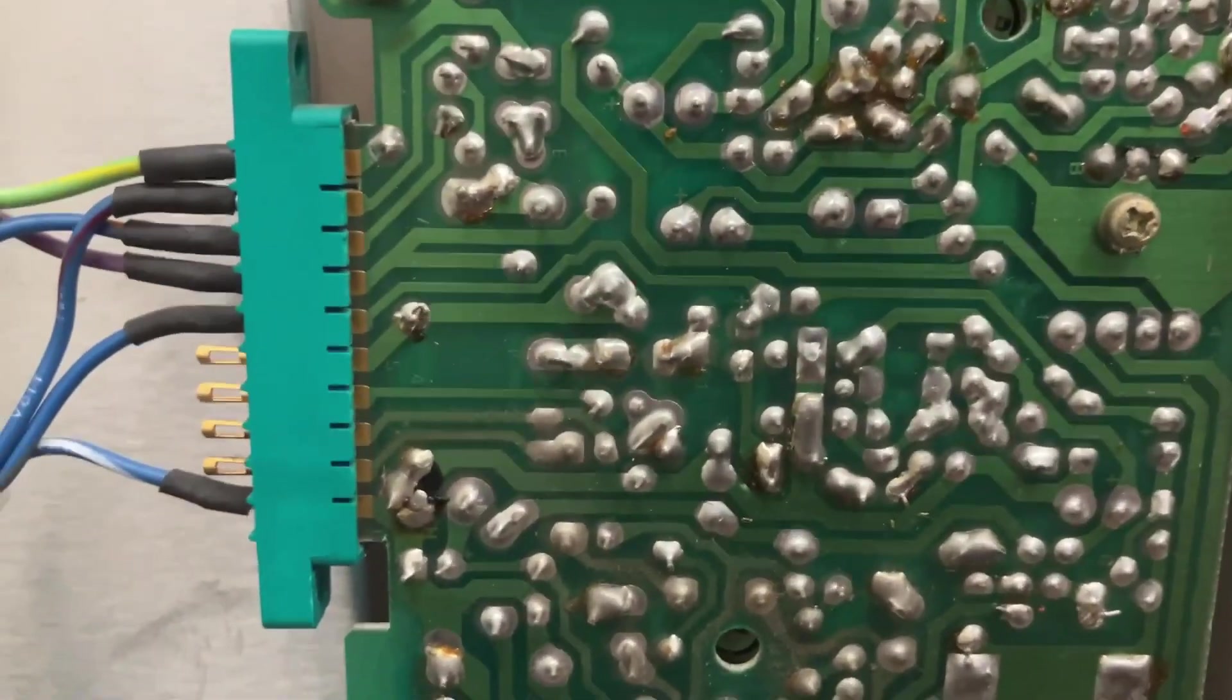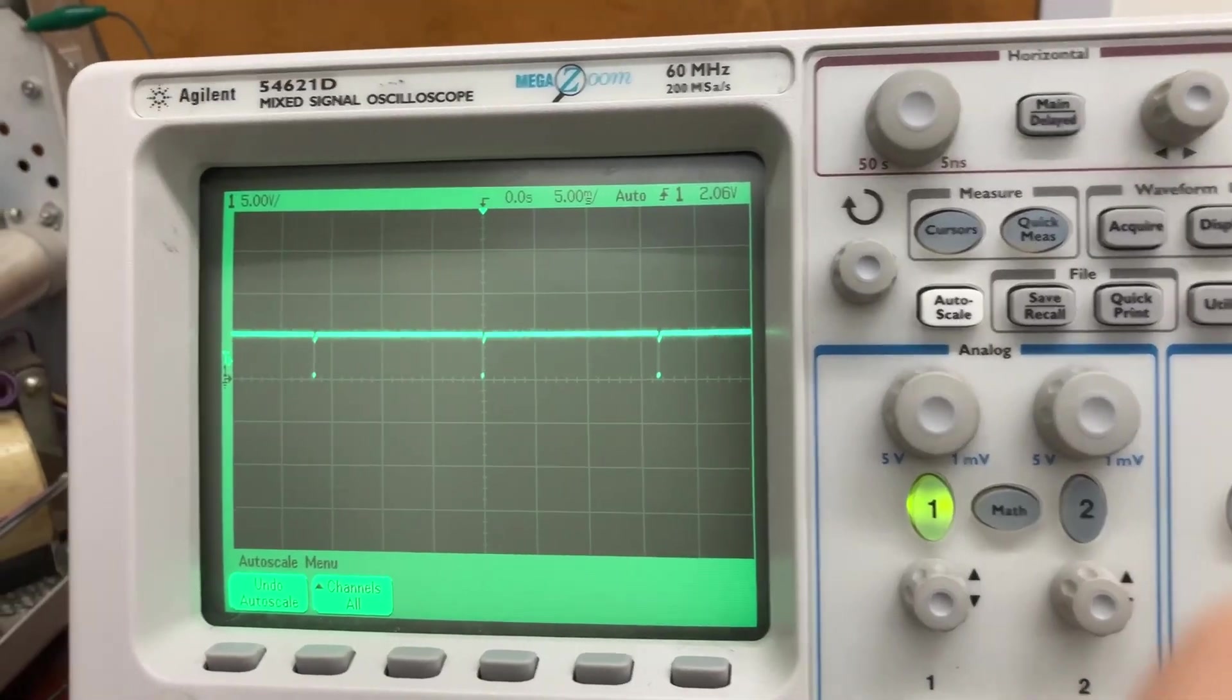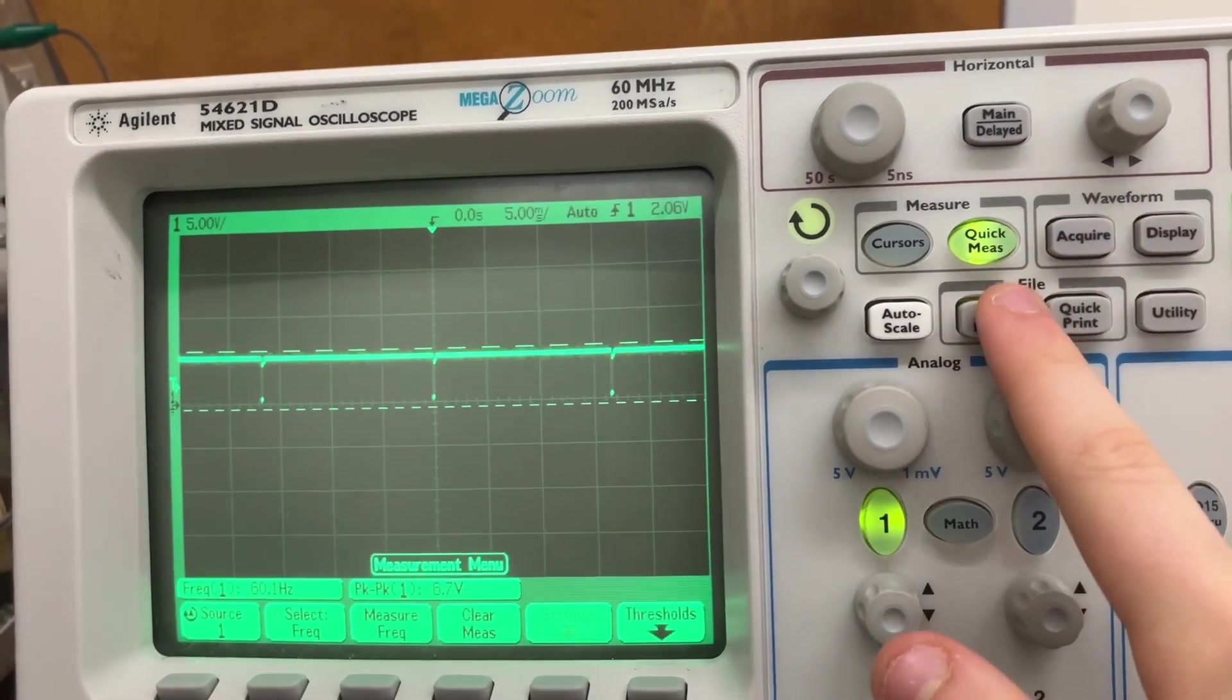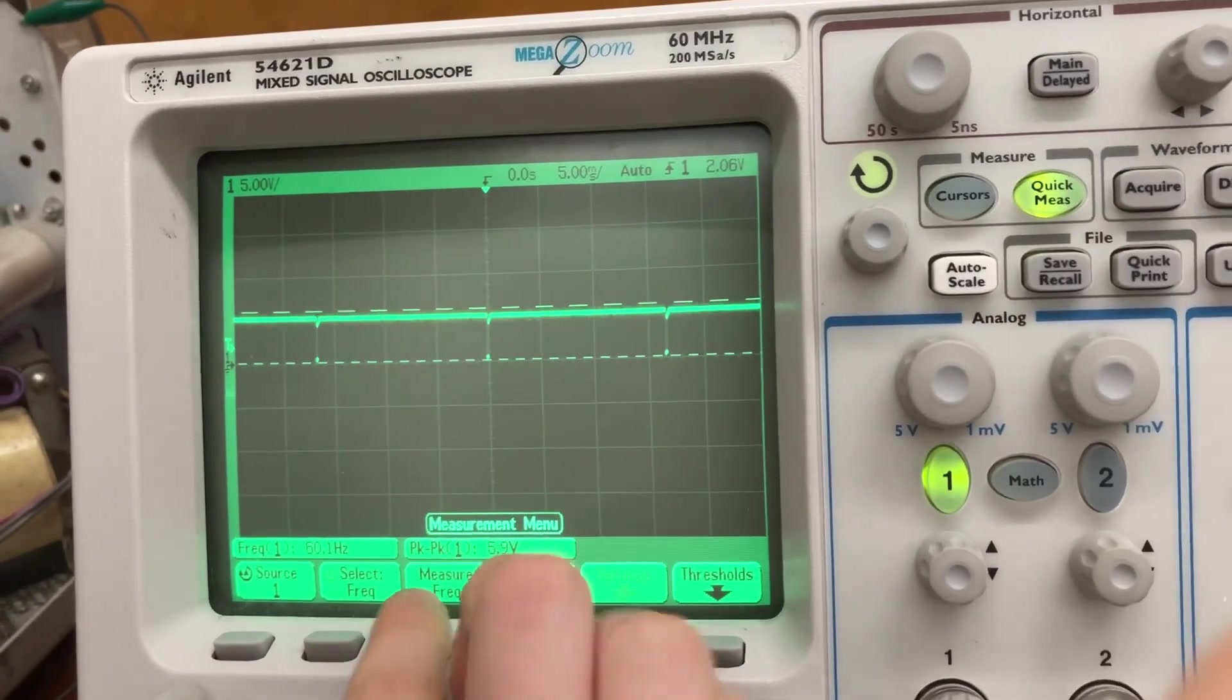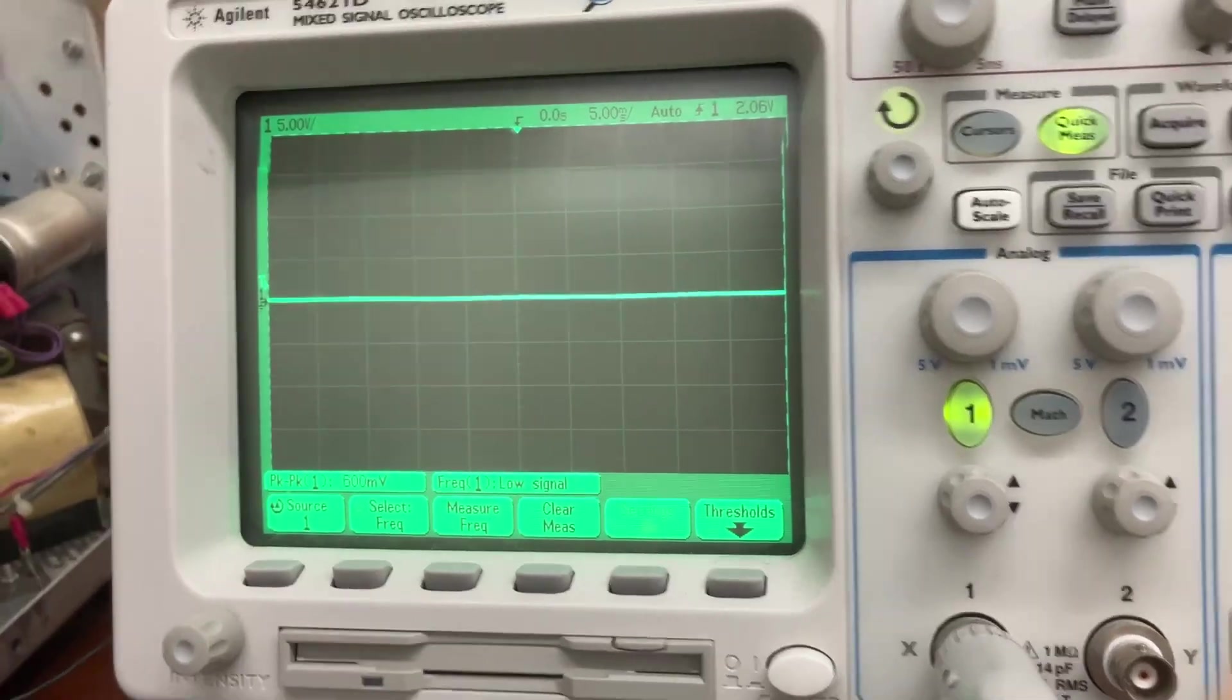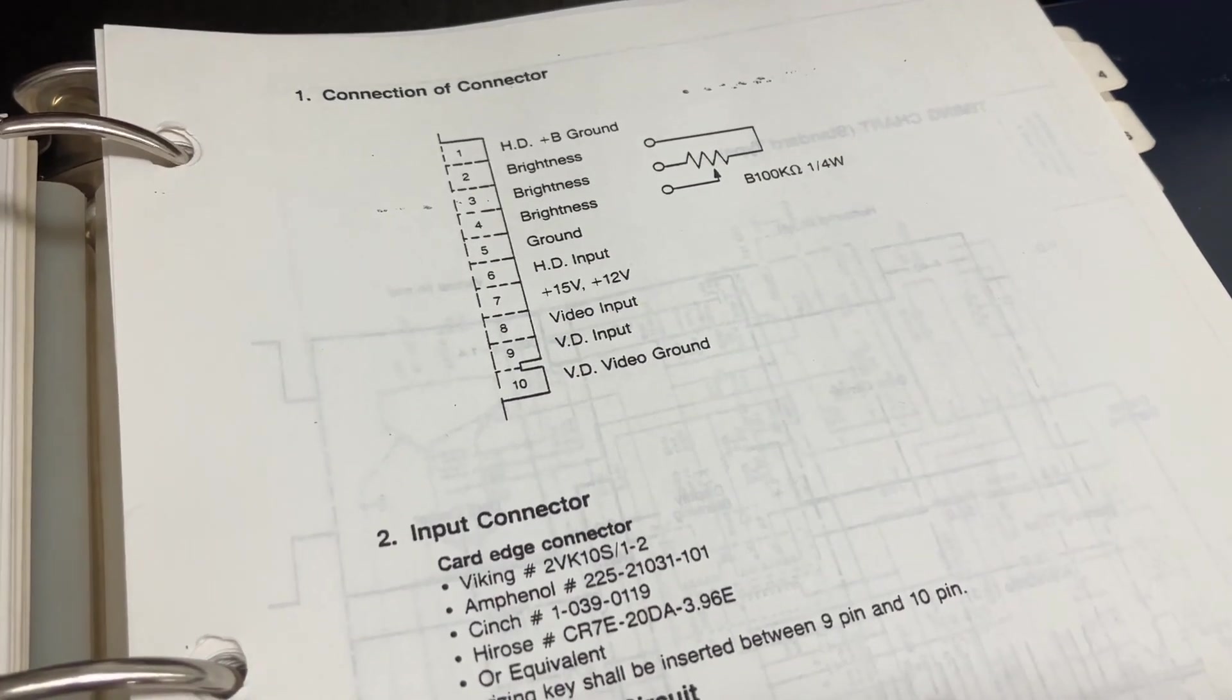I'm going to start by probing the signals coming into the board. Click on quick measurement and click on measure frequency. 60.1 Hertz.